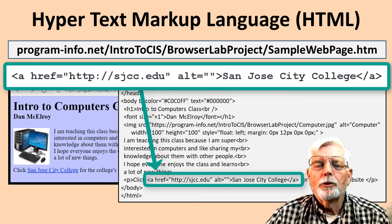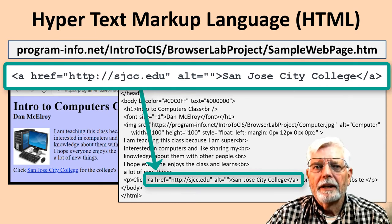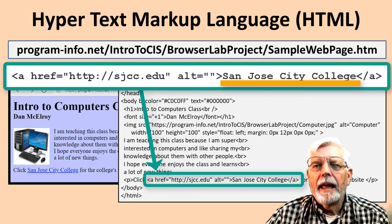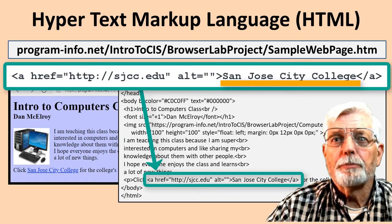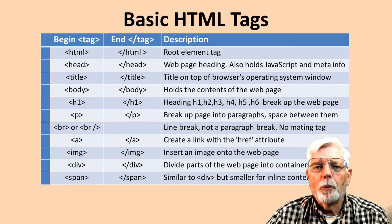The <a> anchor tag usually has the href attribute to provide a link to another web page. The A tag has two parts when used to create a link. The href attribute inside the opening angle bracket A provides the link address — where to go if the link is clicked. Between the A and the /A tags is where the text is provided that gets displayed on the web page for the link. Although there are many more HTML tags than shown, here is a list of the most common tags with a brief description. Most of them have already been used in the sample web page.